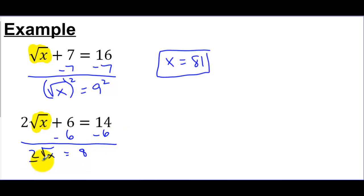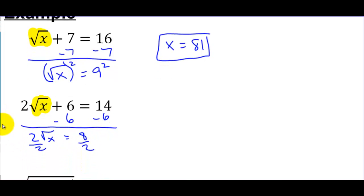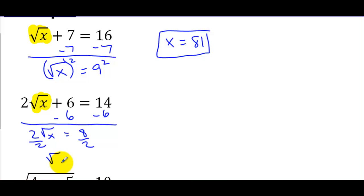To get rid of the 2, I'm going to divide. So now it looks like the square root of x is equal to 4. And then to get rid of the square root of x, I'm going to square both sides. So let's square the square root of x and let's square 4. And that makes x equal to 16. So again, if I check that, the square root of 16 is 4. 4 times 2 is 8. 8 plus 6, that does give me 14.